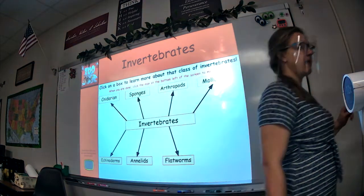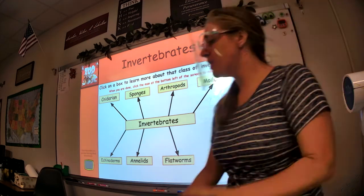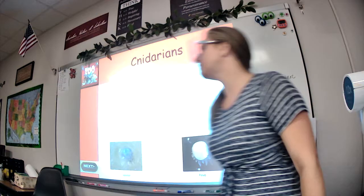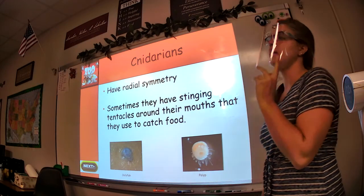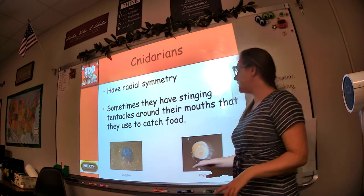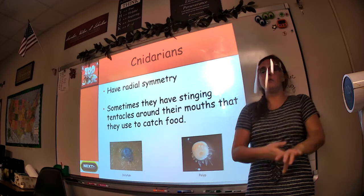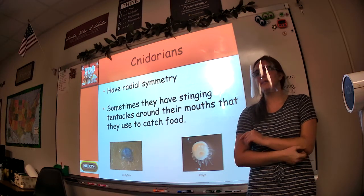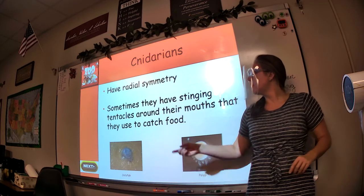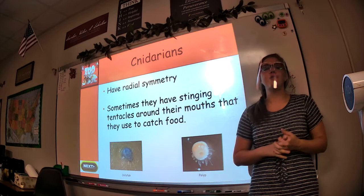So, talking about invertebrates, there are nine different phyla that we're going to look at. The first one are cnidarians. In your notes, go to the section for cnidarians. Cnidarians have radial symmetry, which means they have one central point, like the starfish, and it branches out from there. Starfish do not fall into this category because organisms within this phyla typically have stinging tentacles around their mouths that they use to catch food.